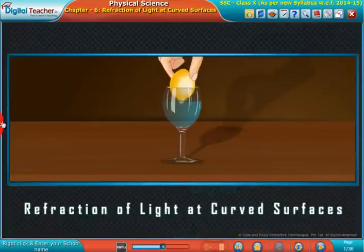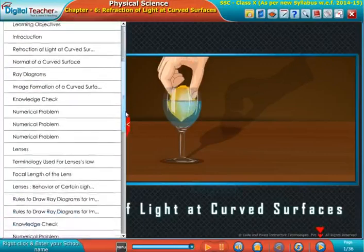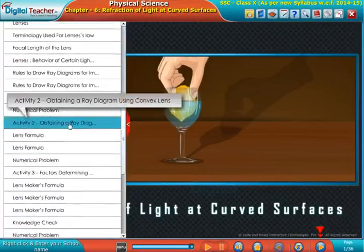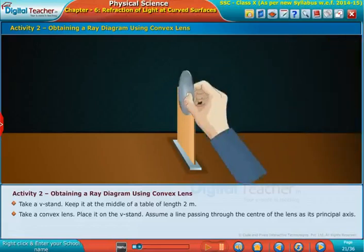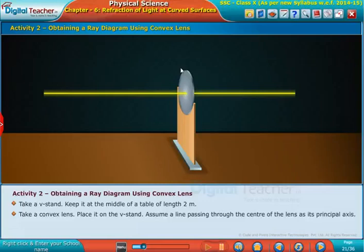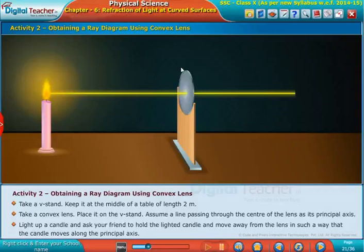Welcome to the chapter Refraction of Light at Curved Surfaces. Take a v-stand, keep it at the middle of a table of length 2 meters. Take a convex lens and place it on the v-stand. Assume a line passing through the center of the lens as its principal axis. Light up a candle and ask your friend to hold the lighted candle.